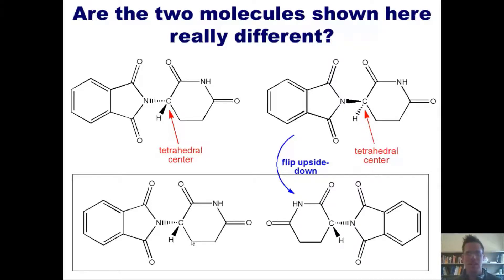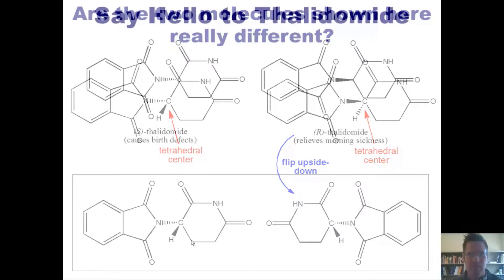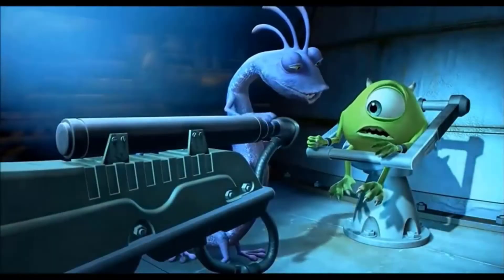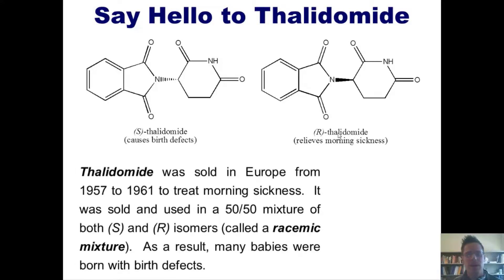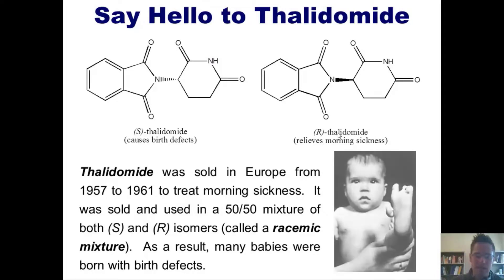Why did I pick these particular structures? Because they have a name and a story. Say hello to thalidomide. The enantiomer on the left is called S-thalidomide, and the one on the right is R-thalidomide. S-thalidomide causes birth defects, while R-thalidomide relieves morning sickness in pregnant women. Thalidomide was sold in Europe from 1957 to 1961 as a 50/50 racemic mixture of both enantiomers to treat morning sickness, and as a result many babies were born with malformed limbs.